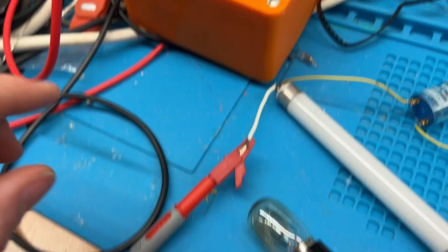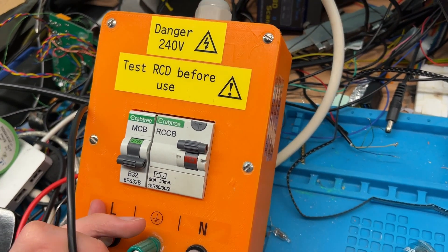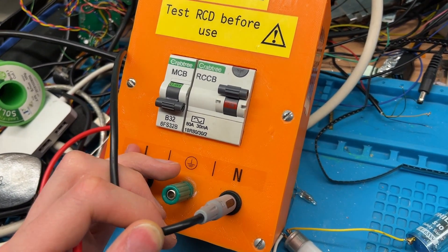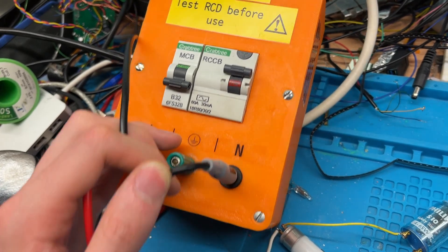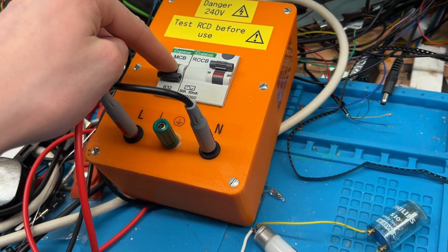These crocodile clips are supplied from the mains from this little box I 3D printed. It's got an RCD in there and an MCB in there, yes that's a 32 amp.